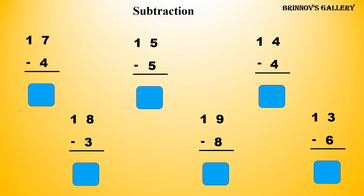17 minus 15 is equal to 2. 15 minus 15 is equal to 0. 13 minus 0 is equal to 13. 18 minus 3 is equal to 15. 15 minus 5 is equal to 10. 19 minus 8 is equal to 11. 14 minus 4 is equal to 10. 13 minus 6 is equal to 7.